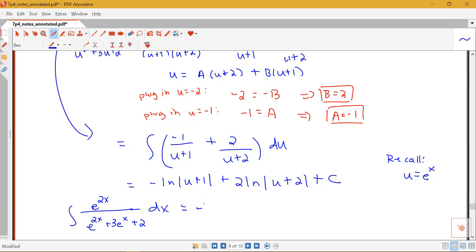This equals negative log e to the x plus 1 plus 2 log e to the x plus 2 plus c. And we can certainly leave it in that form. We don't have to use log rules to simplify it or anything like that. So we can leave it just like this.